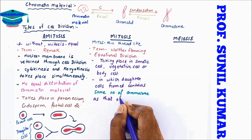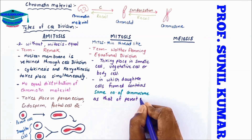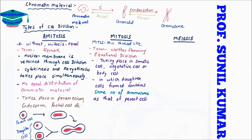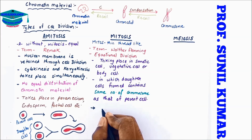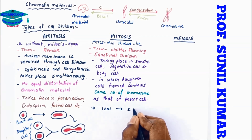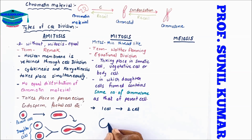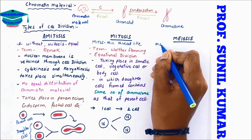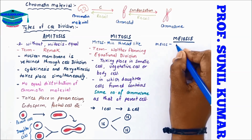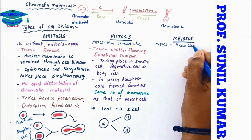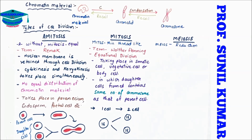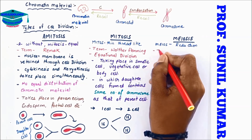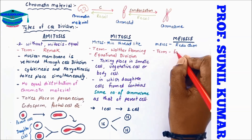In mitosis, the daughter cells formed contain the same number of chromosomes as that of the parent cell. From one cell we get two cells. For example, if the parent cell has 16 chromosomes, the daughter cells will also have 16.